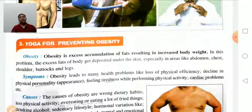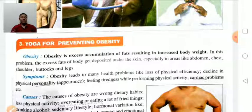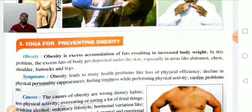For purification of body and mind, there are eight states which we have to achieve: yam, niyam, asana, pranayam, pratyahar, dharana, dhyana. After achieving these stages, there will be the union of atma with parmaatma.